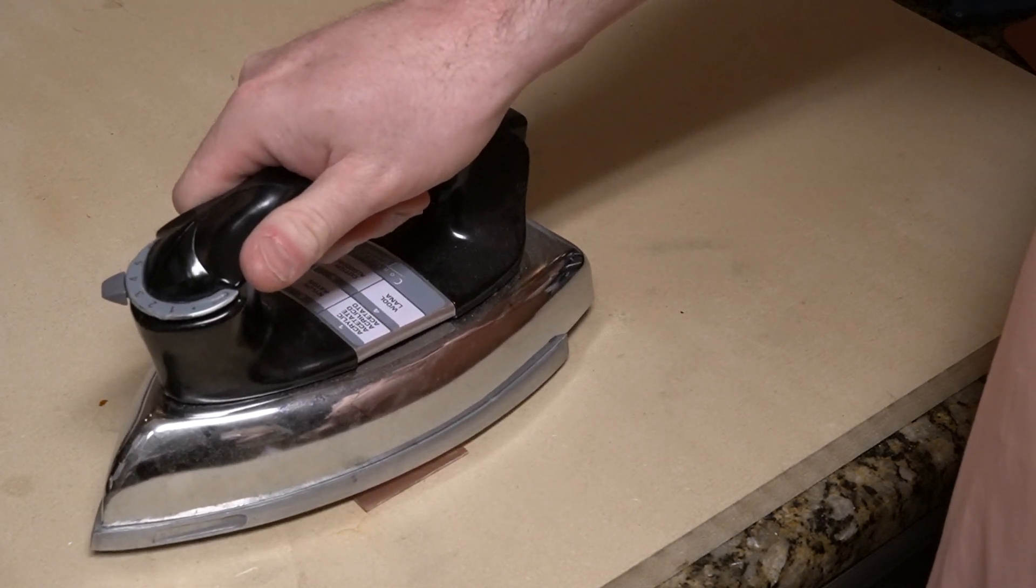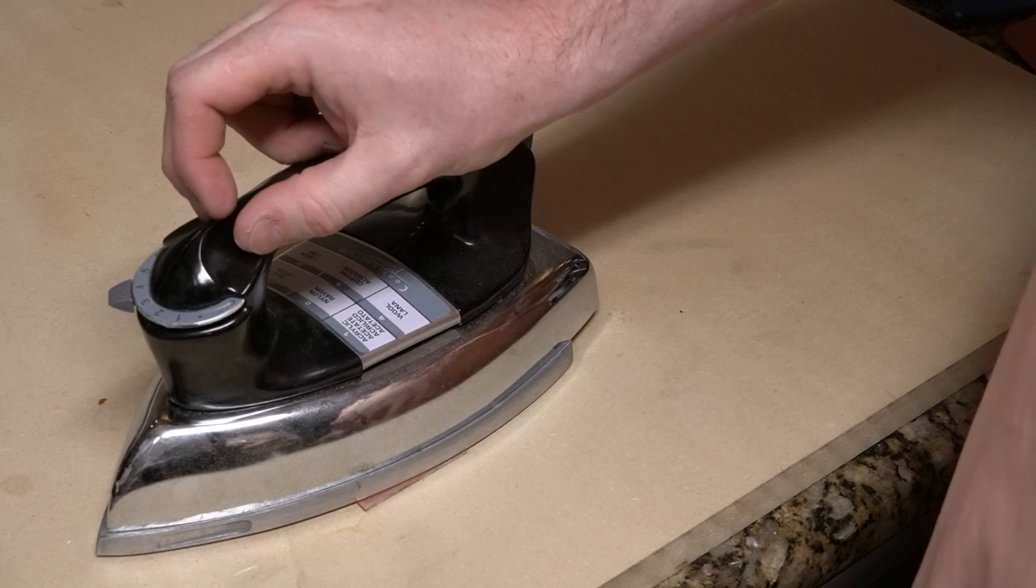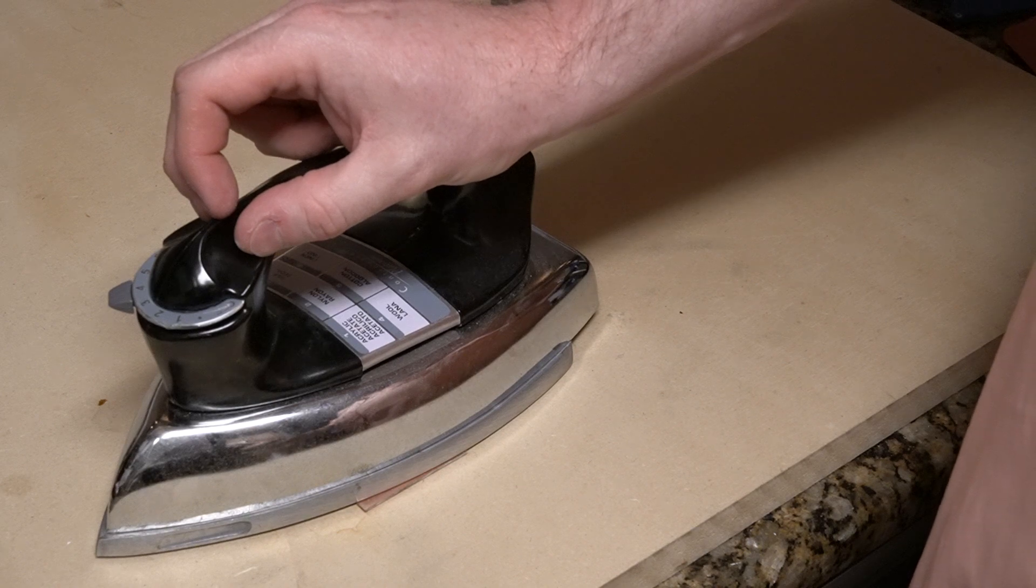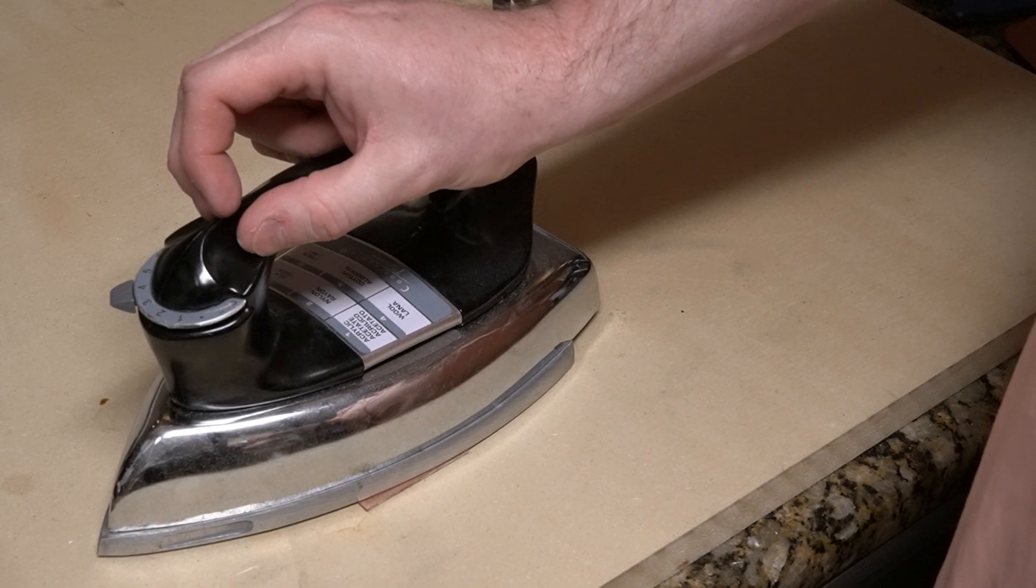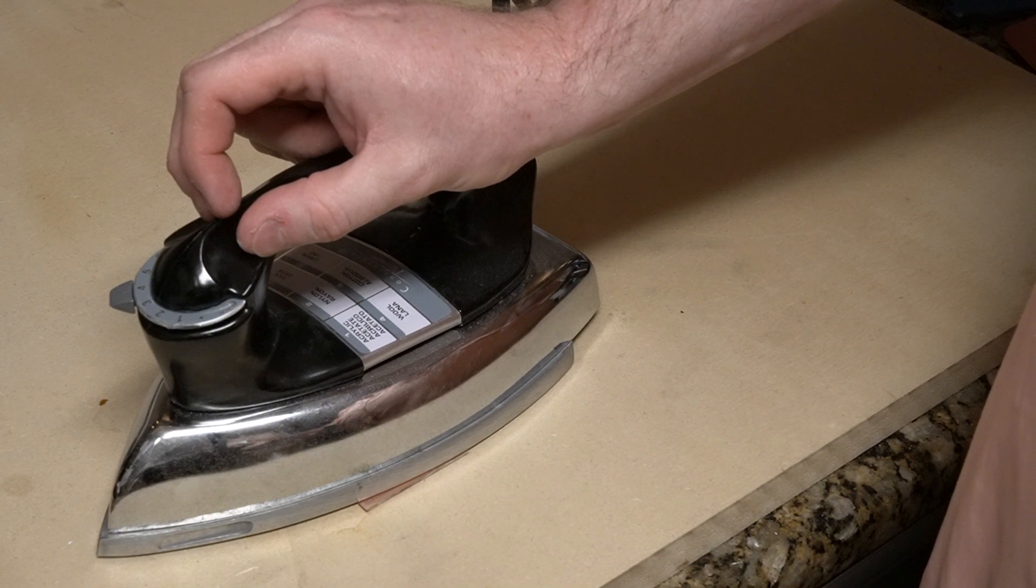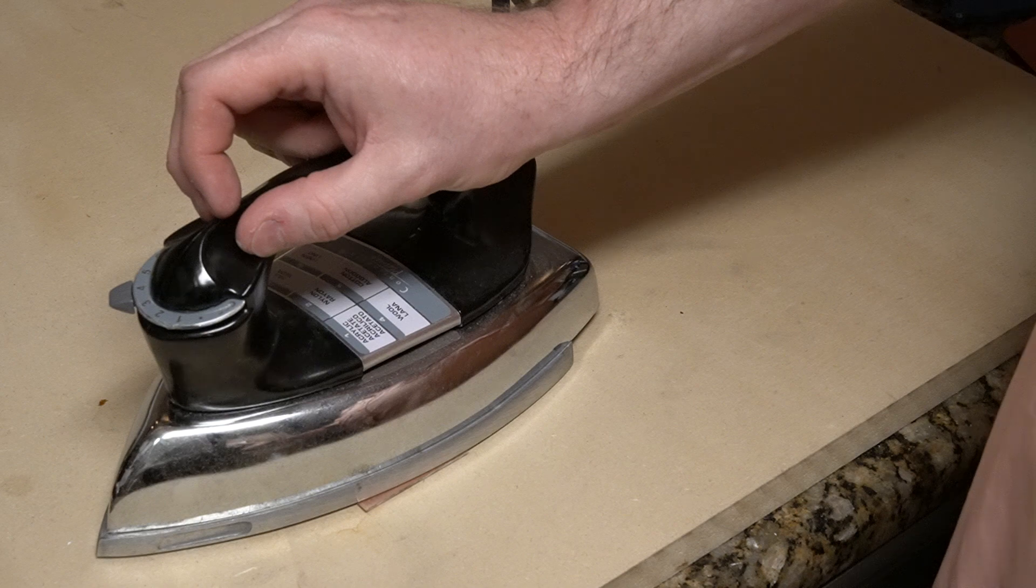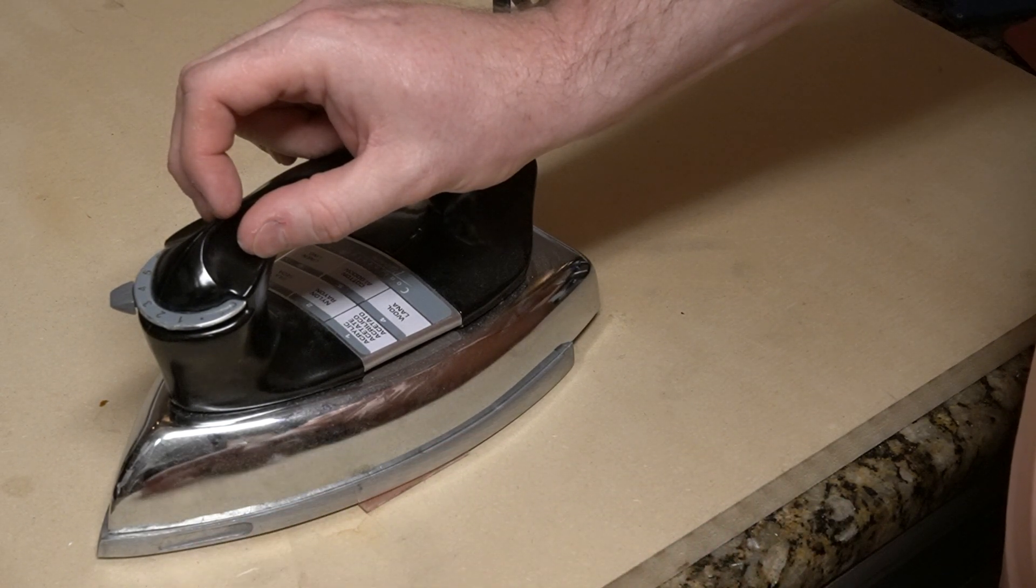The first thing we're going to do is we're going to place the iron right down on there and we're going to let that sit for a minute. I tested the iron earlier by setting it on a piece of paper and watching what area turned brown first so I could get an idea of what the hottest part of the iron was and where my heat distribution was. It's hottest in the front part, in the toe of the iron.